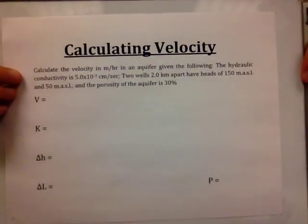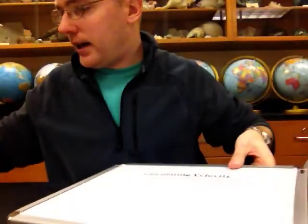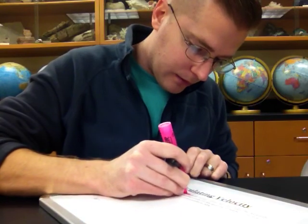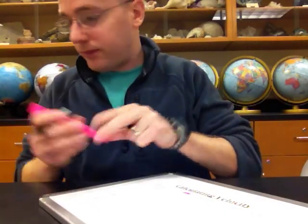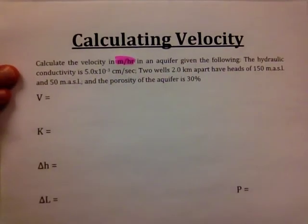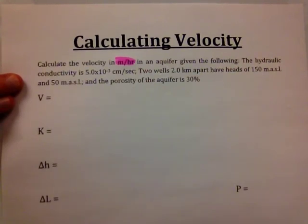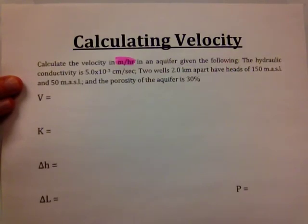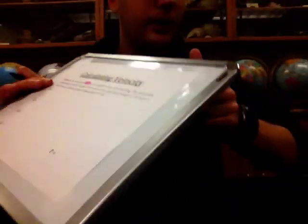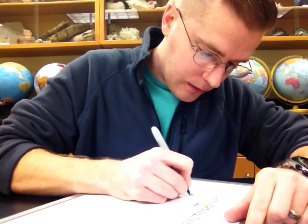Let's do a sample problem for groundwater velocity: calculate the velocity in meters per hour in an aquifer given the following. The hydraulic conductivity is 5.0 times 10 to the minus third centimeters per second. Two wells 2.0 kilometers apart have heads of 150 meters above sea level and 50 meters above sea level, and the porosity of the aquifer is 30%.